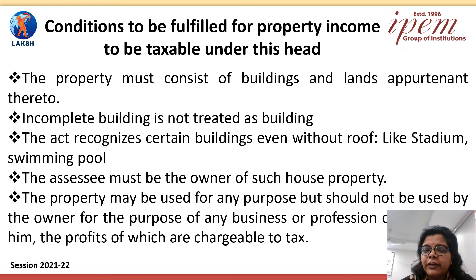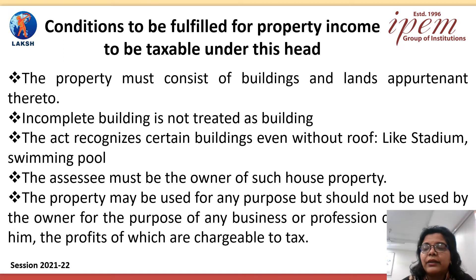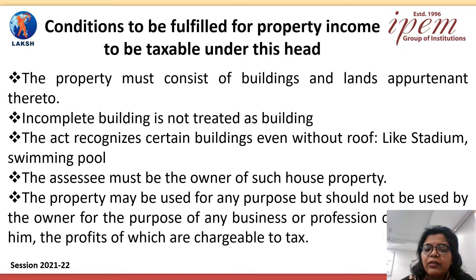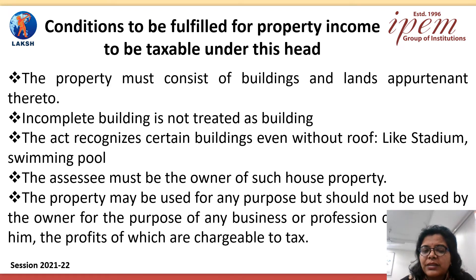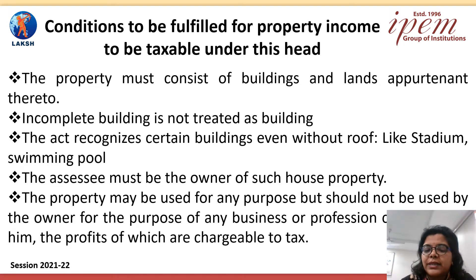Now, conditions to be fulfilled for property income to be taxable under this head. The property must consist of a building and land appurtenant thereto. Second, an incomplete building is not treated as a building. However, the Act recognizes certain buildings even without a roof — like a stadium or swimming pool. They don't have a roof but we don't say they are incomplete buildings. Such buildings are also called house property and income generated from them is also taxable.